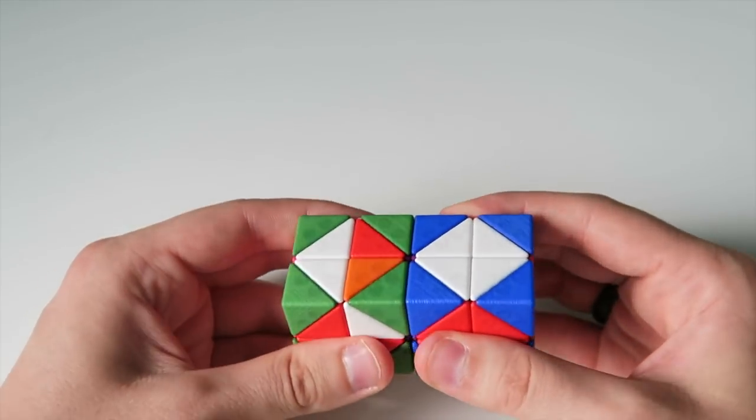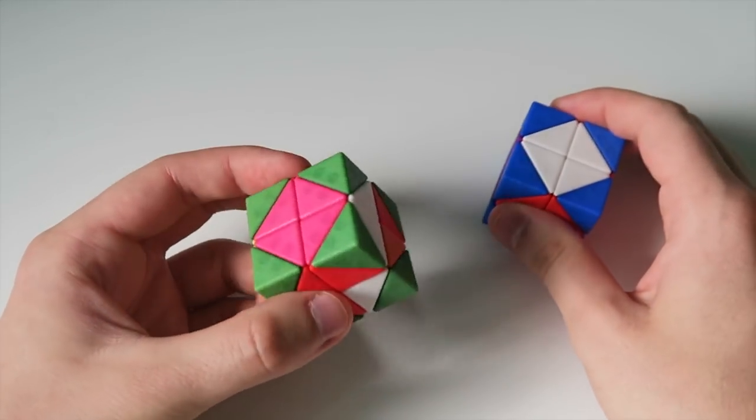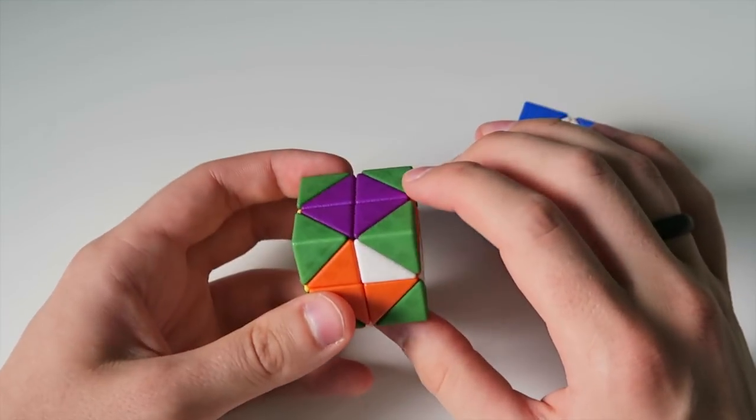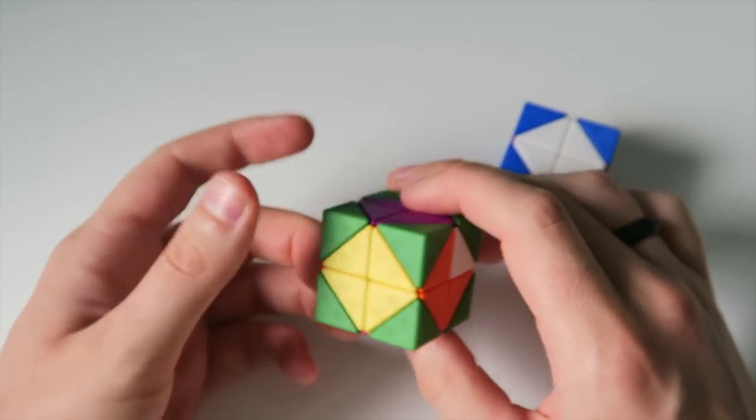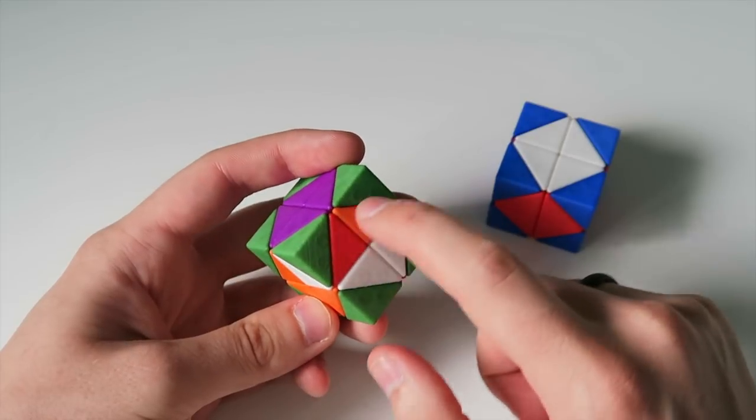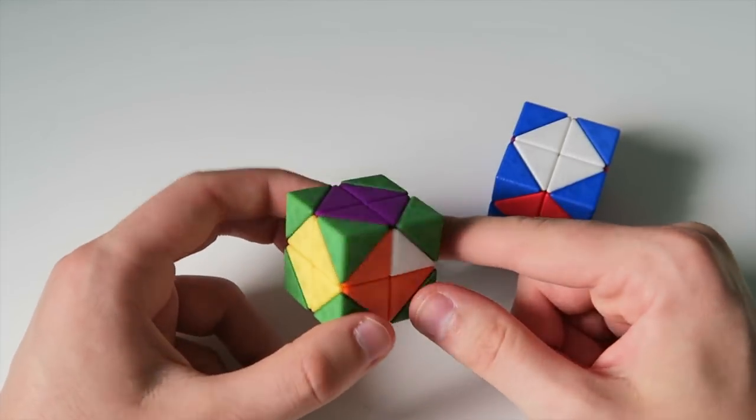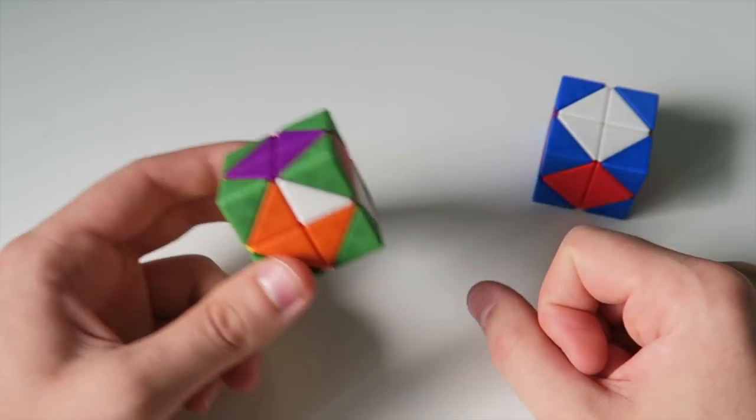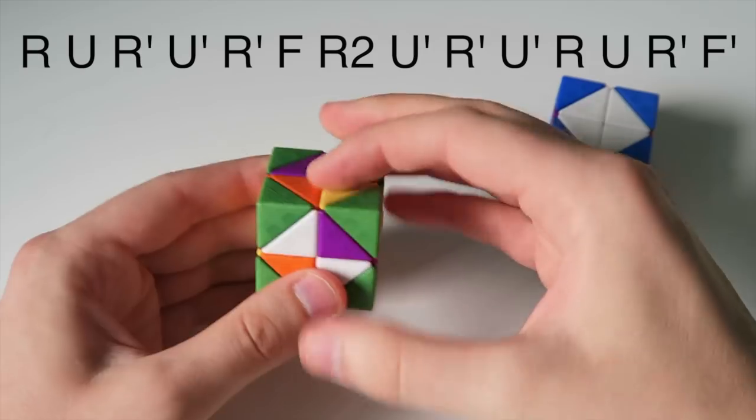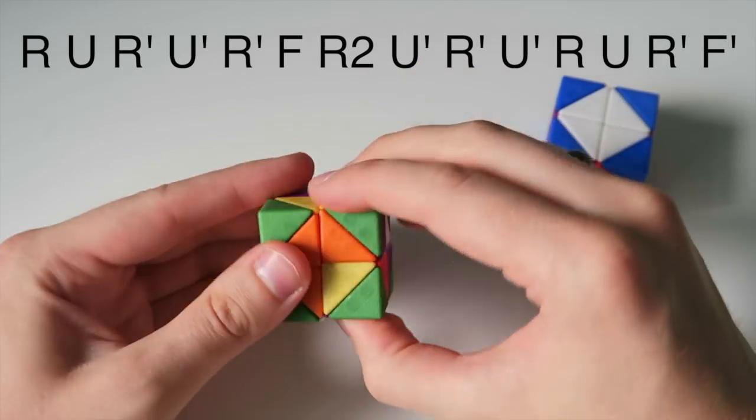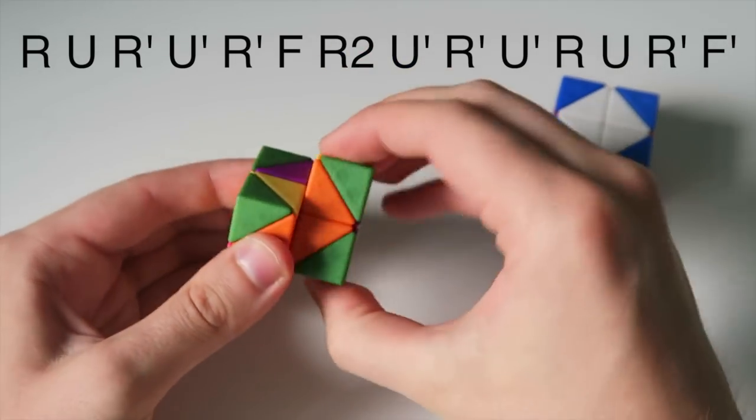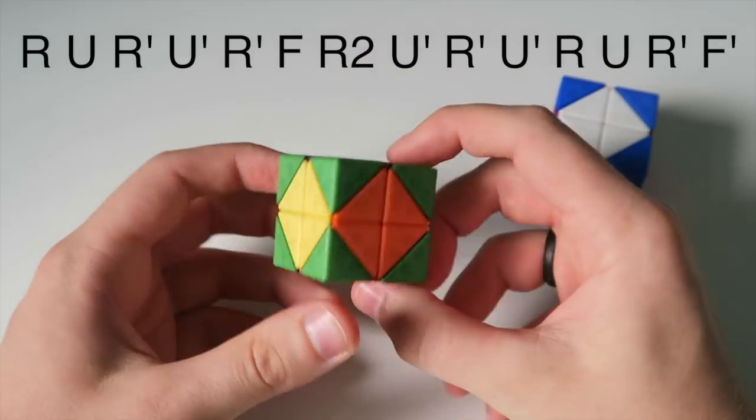So as you can see the flip, if we take the pieces apart, has given me a t perm. So we have the top face solved, bottom face solved and on the left side we have these two corners solved and these two needing to be flipped. So this is the equivalent of a t perm on the 2x2. So let's do a t perm: r u r prime u prime r prime f r2 u prime r prime u prime r u r prime f prime and that solves the puzzle.